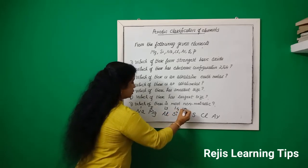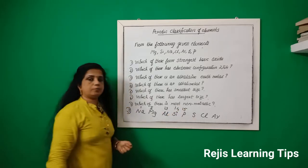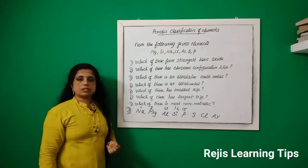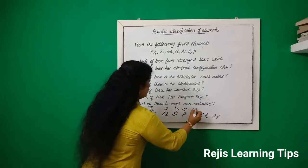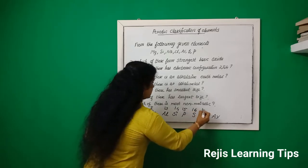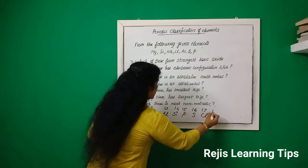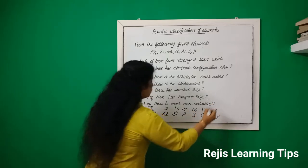Phosphorus is the 15th group element, sulfur is the 16th group element, chlorine is the 17th group element, and argon is the 18th group element.